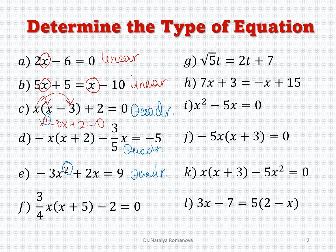Example f: we have a product of variables here, so it would be x times x, giving you x squared. The highest value of the exponent would be 2, so this is quadratic.